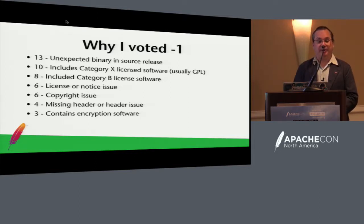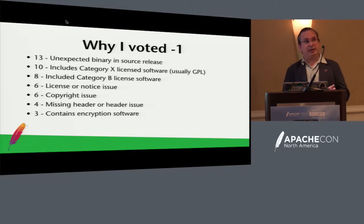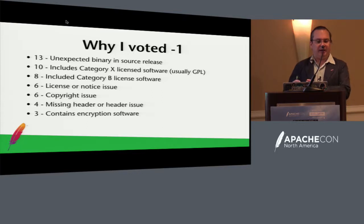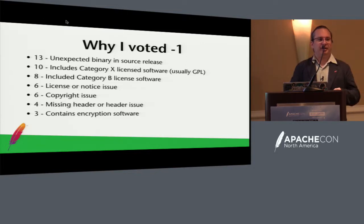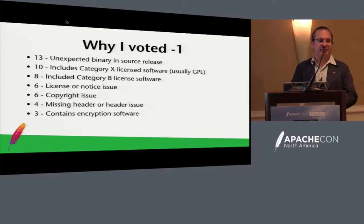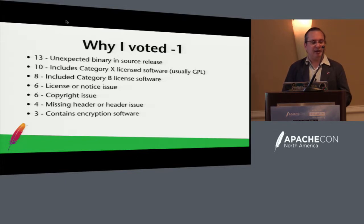I do know of one occasion where a release was passed with GPL software in it because they got permission from VP Legal to do so, and said they were going to get rid of it in the next release. So even if you think your vote may not pass, if you say 'we have these issues and we're going to fix them in the next release,' that's a good way to go. Quite often, if you explain things, it's more likely that your vote will pass.